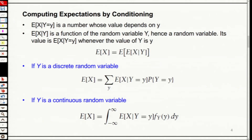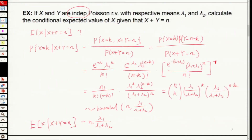So why do you fix Y and then calculate E[X]? Because you want to calculate the expectation of X. We're going to have an example after this. X and Y are two random variables. Now if you give the value of Y — Y equals lowercase y — then you calculate E[X] given Y equals y. And note that X and Y are independent.